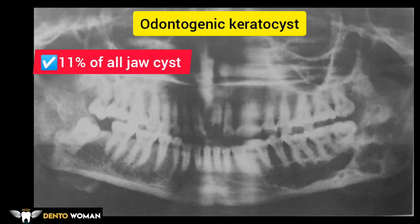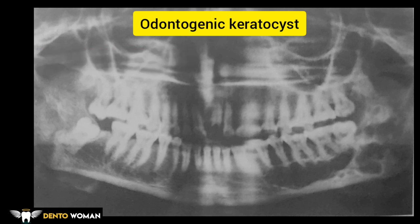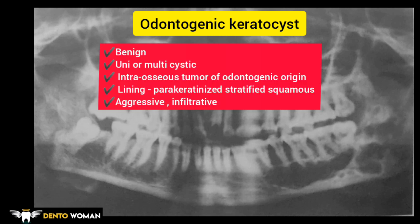The WHO recommends the term keratocystic odontogenic tumor as it better reflects its neoplastic nature. KCOT is a benign uni- or multicystic intraosseous tumor of odontogenic origin with a characteristic lining of parakeratinized stratified squamous epithelium and potential for aggressive infiltrative behavior.